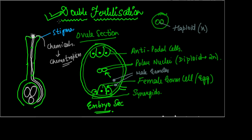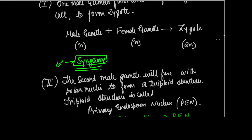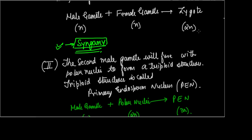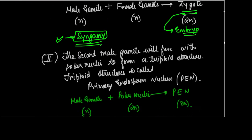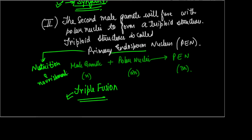This ovule will have a zygote, which will further develop into the embryo. The ovule as a whole is going to develop into a seed. The primary endosperm nucleus will provide nutrition and nourishment to the embryo.